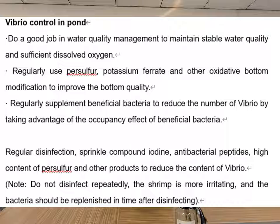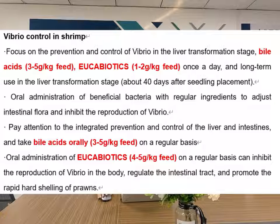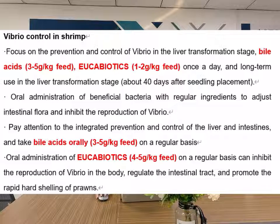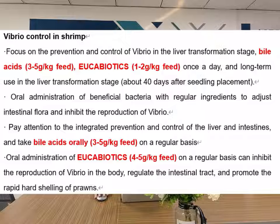The shrimp is more irritating and the bacteria should be replaced in time after disinfection. For vibrio control in shrimp, focus on the prevention and control of vibrio in the liver transformation stage. Use bio-assays at 3 to 5 g per kg feed, and eukabiotics at 1 to 2 g per kg feed, once a day. Long-term use in the liver transformation stage — about 40 days after seedling placement. Oral administration of beneficial bacteria with regular ingredients helps adjust intestinal flora and inhibit the reproduction of vibrio.